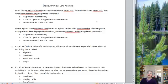So pivot table real estate pivot, which is one of the examples we did, is based on data table sales data. After I add data to sales data, how does real estate pivot get updated to match?